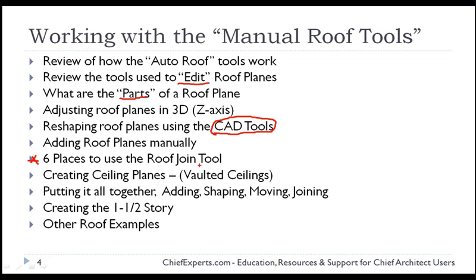I'm going to talk about the six places you use the roof join tool, how to create ceiling planes and vaulted ceilings, and then we'll put it all together - we'll take what we discussed and start working on a plan using all the different tools together. As part of that, we'll create a story-and-a-half, add some dormers, and do some different things there.